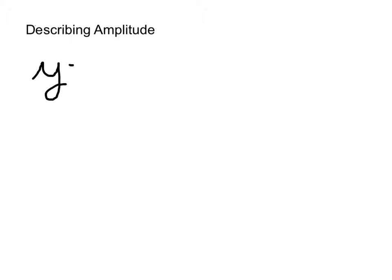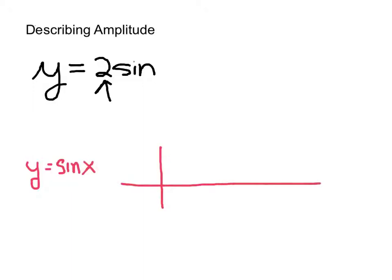The homework assignment today will be taking the graphs that you made last time and fine-tuning them with better vocabulary. So if you have a graph that says y equals 2 sine x, you should be able to recognize that because the 2 is in front of the sine, that 2 is the amplitude of the graph. I'm going to graph the regular sine function with the 5-point method, and I would like you to start graphing with the 5-point method.